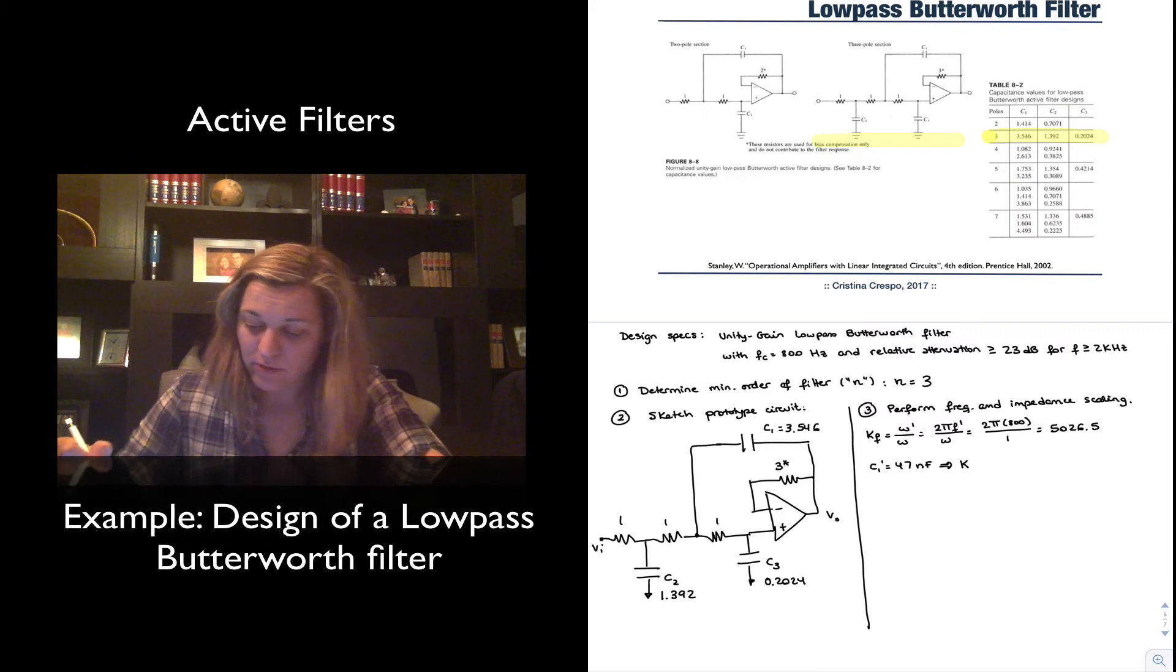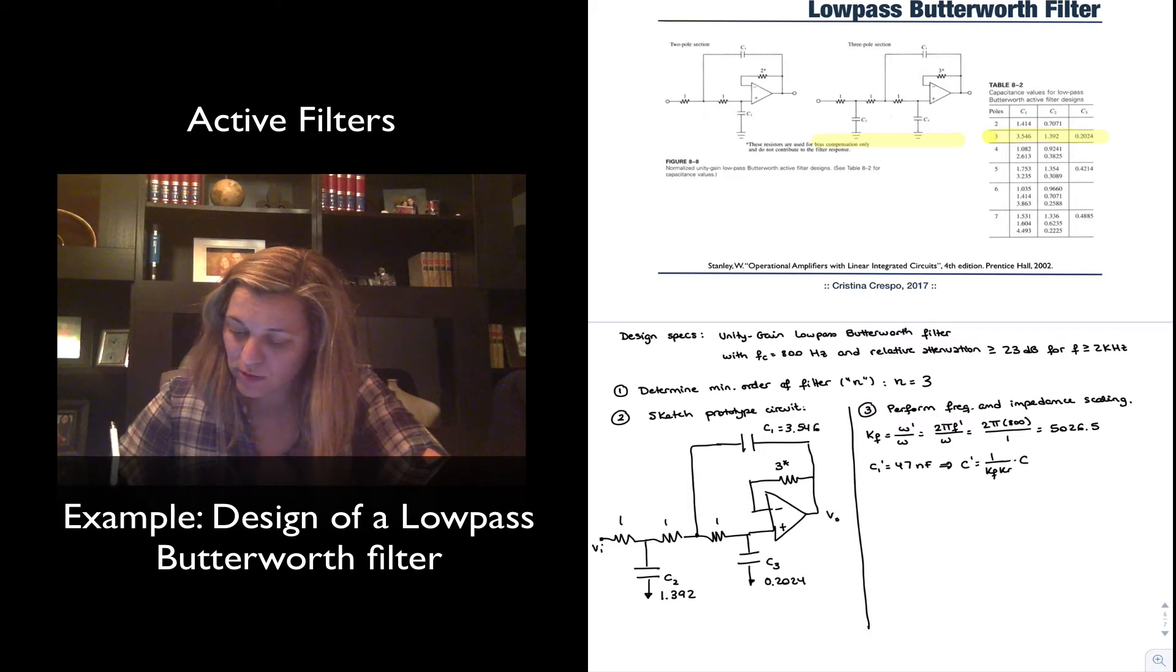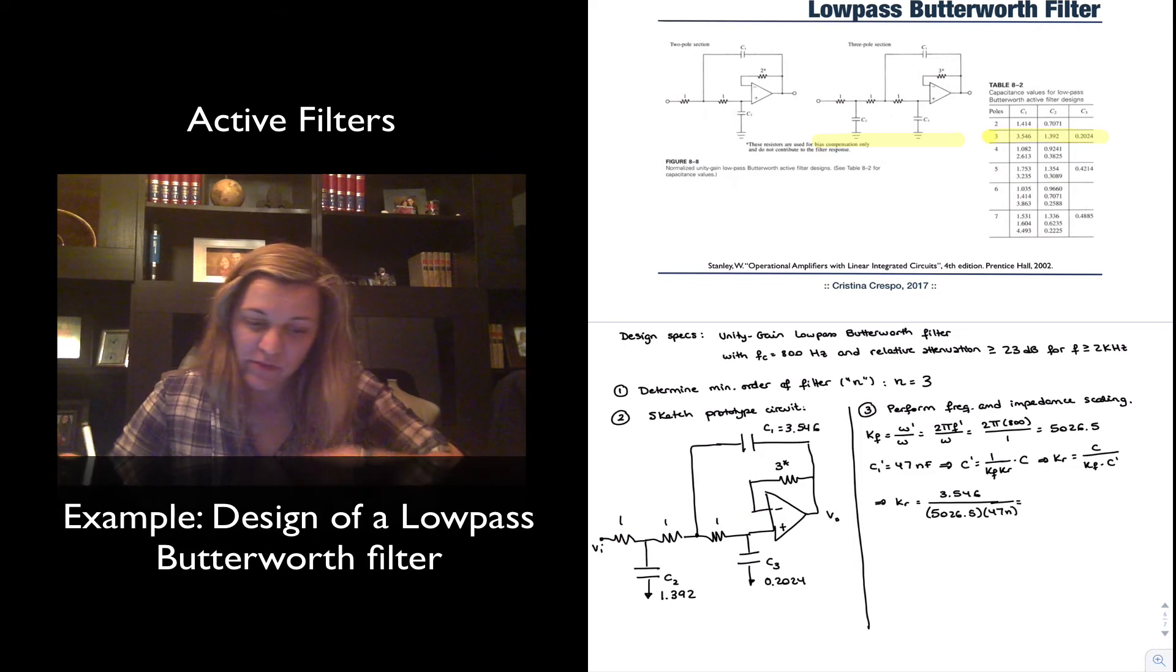Since I know that C prime is equal to 1 over Kf times Kr times C, I can conclude that Kr is equal to C divided by Kf times C prime. And therefore I can calculate my Kr as being equal to 3.546 divided by 5026.5 times my new value of C1, which is 47 nF. And that gives me 15,000.